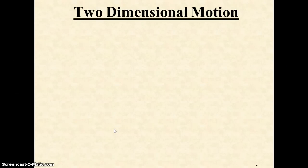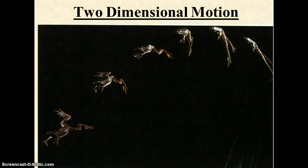This screencast moves into two-dimensional motion, which is Chapter 3 in our textbook. The first picture you see here is a photograph with shutter speed at equal increments of a frog in projectile motion. Notice it has both an X and Y component.